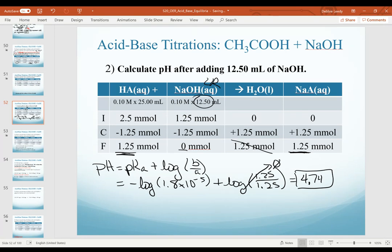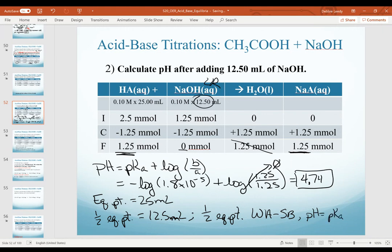Key thing to point out at this point, this specific point in our titration, is where we are relative to volumes. Remember, at the beginning of this set of calculations, we determined our equivalence point volume would be 25 milliliters. Notice where we are right now with the volume of base is exactly half of that. This point in a titration is called the half equivalence point. For a weak acid strong base titration, the calculation for pH will always be the pKa. That is because the amount of base that's formed will always equal the amount of acid that's left over.